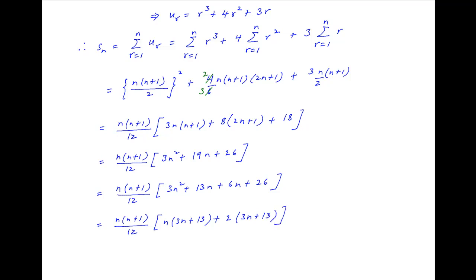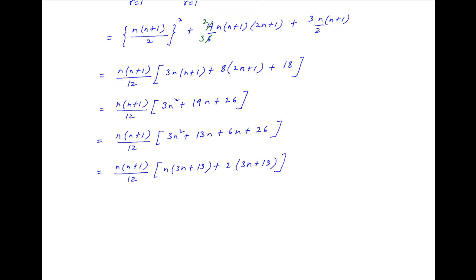Therefore, the sum to n terms of the given series is equal to (1/12) × n(n+1)(n+2)(3n+13), which is the required answer.